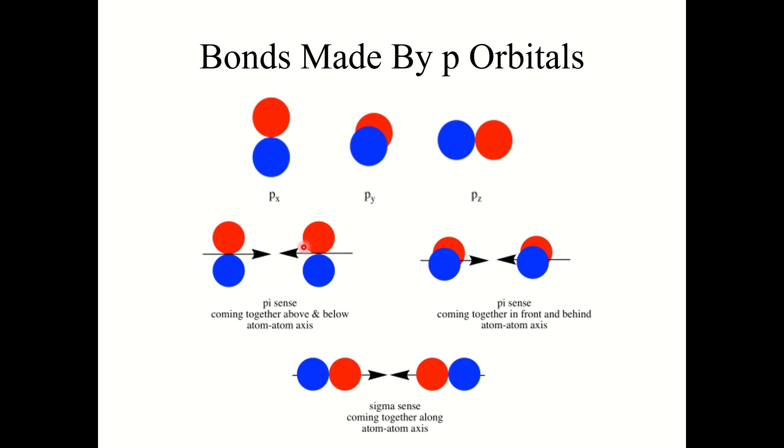So if we take two of these px orbitals and we push these nuclei closer together, you'll notice that these orbitals will overlap side-to-side above and below that atom-atom axis or the internuclear axis. So these two px orbitals interacting would form a pi bond.